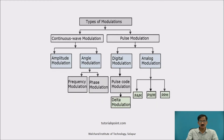Types of modulations: continuous wave modulation and pulse modulation. In continuous wave modulation, they are classified as amplitude modulation and angle modulation. Angle modulation is further classified as frequency modulation and phase modulation. In pulse modulation, there are two types — analog and digital. In analog, we have PAM, PWM, and pulse position modulation PPM. In digital modulation, we have PCM — pulse code modulation — further divided into delta modulation, adaptive delta modulation, and differential pulse code modulation.